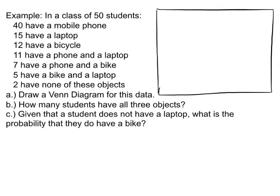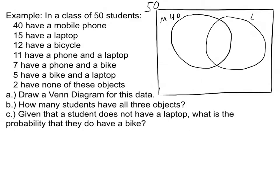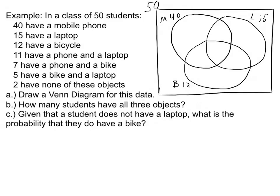Here's a class of 50 students. 40 of them have a mobile phone, so I'll make that circle large. 15 students have a laptop — I'm giving myself a large overlap area. And 12 students have a bicycle. It's very easy when drawing these diagrams to make the intersections really small, so don't feel bad about taking up a lot of space.